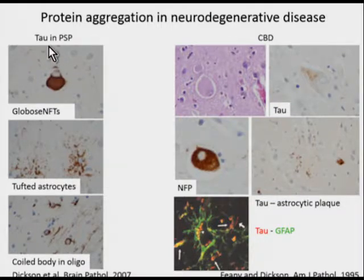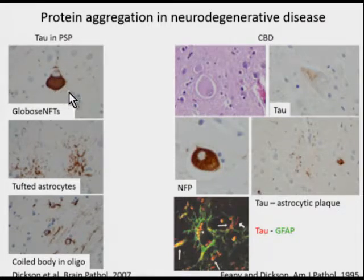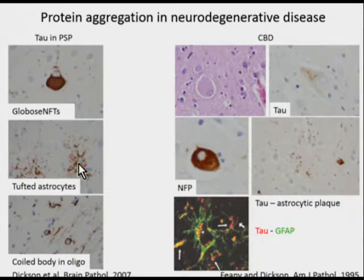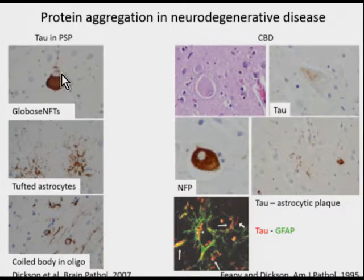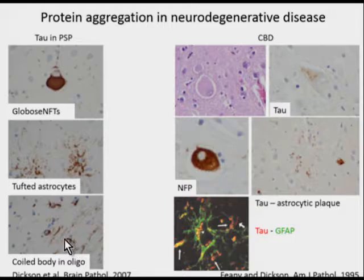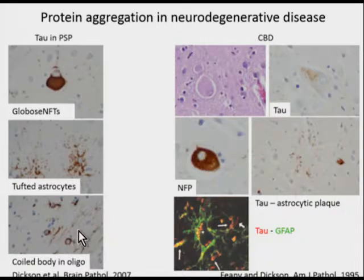Further appearances include progressive supranuclear palsy (PSP), in which tau accumulates in globose neurofibrillary tangles. Tau can also accumulate in tufted astrocytes, which form fuzzy shrub-like structures. This illustrates that accumulation is not always just in neurons—it can also occur in astrocytes. Coiled bodies in oligodendrocytes are present in PSP and some other disorders including grain disease, and these are found in the white matter.